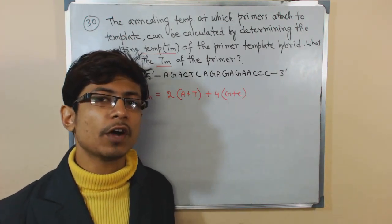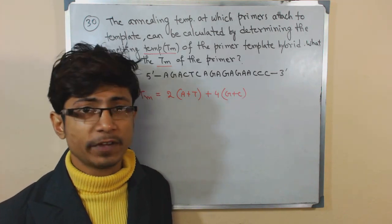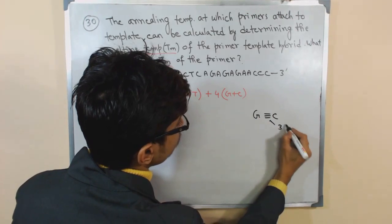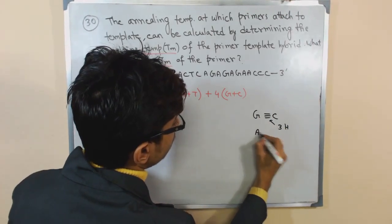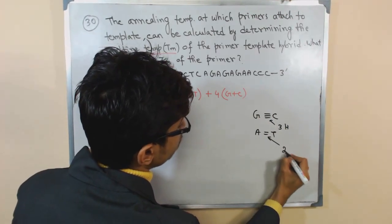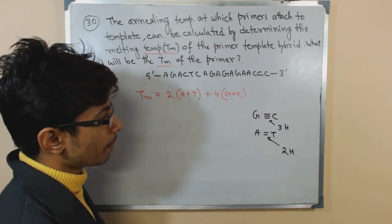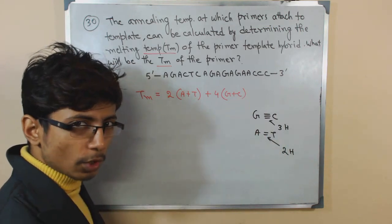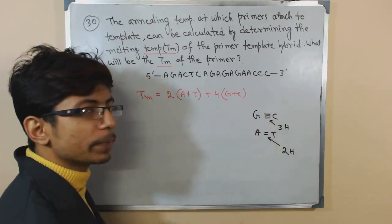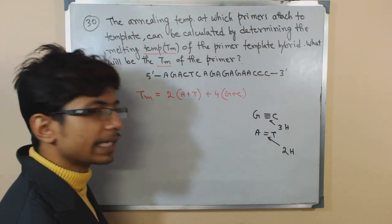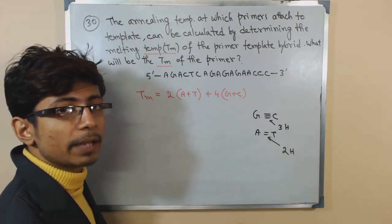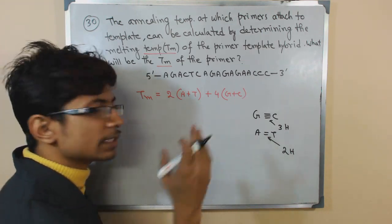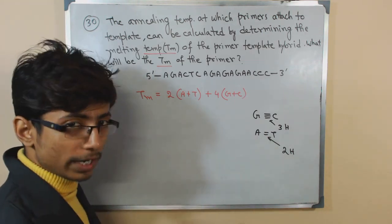Tm is going to be higher if your primer is consisting of more GC. That is fair understanding because G pairs with C by 3 hydrogen bonds and A pairs with T by only 2 hydrogen bonds. GC is a much stronger hydrogen bond than AT. If GC is present in higher content, you require more temperature to melt down that primer DNA hybrid. The Tm will be lower if AT is more because it consists of only 2 hydrogens.